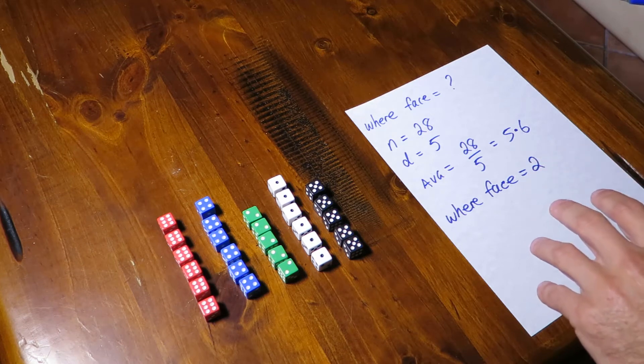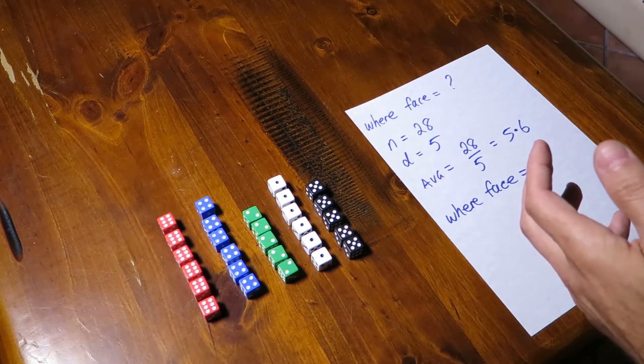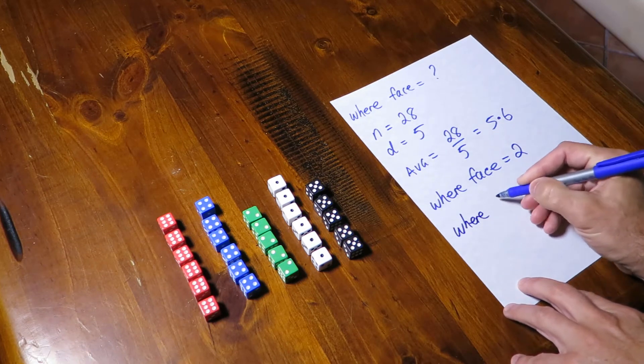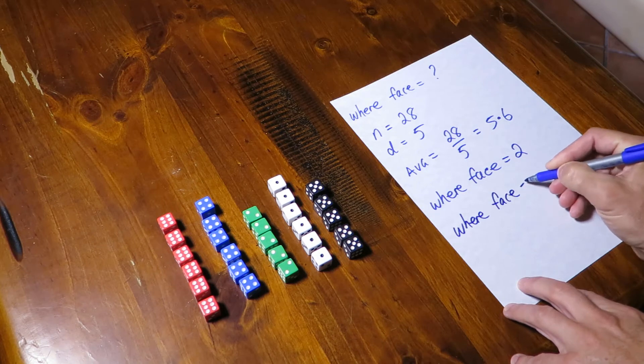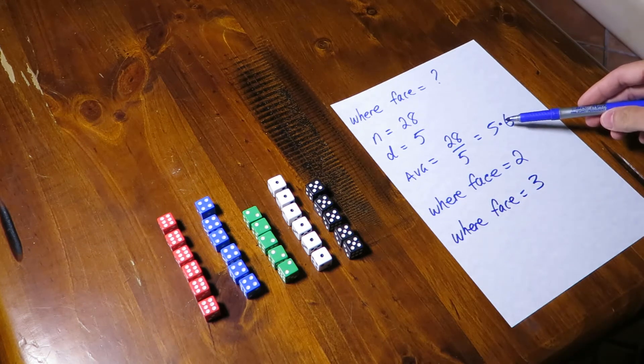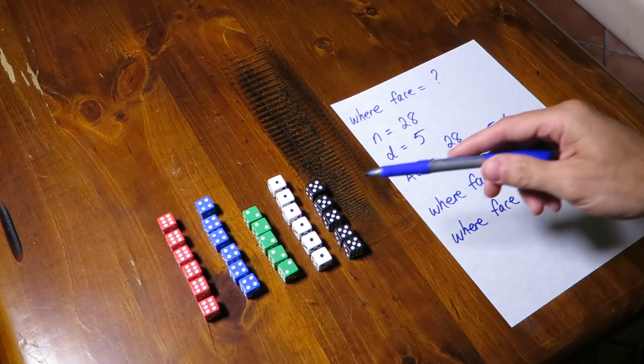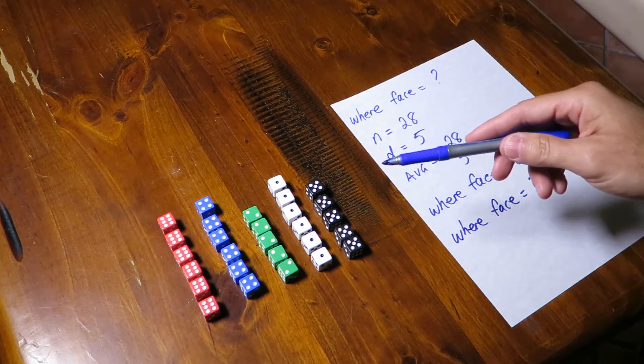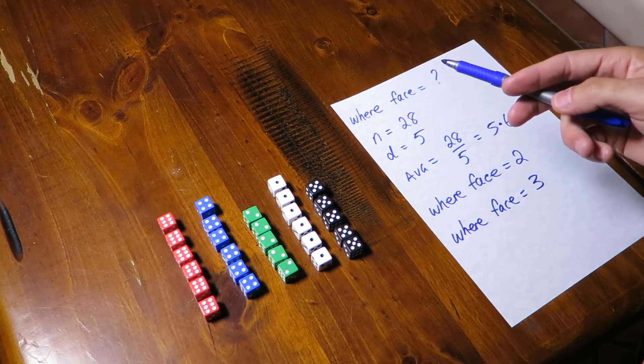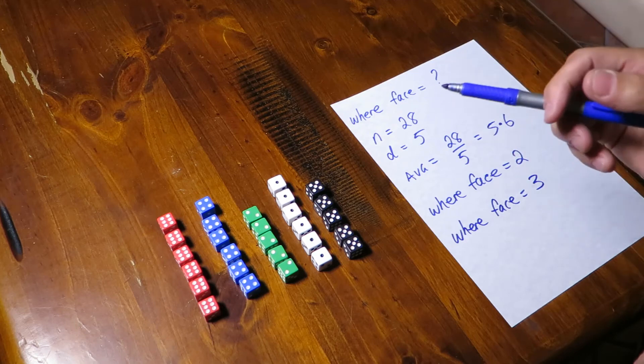The problem comes when we have something a little bit odd about the distribution. What if I ask myself the question where face equals three. My estimate is that there'll be just over five dice. If we look there there's actually none. That'll be a bad estimate and that can lead to bad execution plans. And that's where histograms might have to come into play.